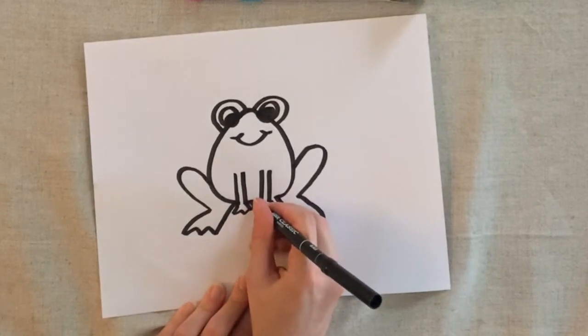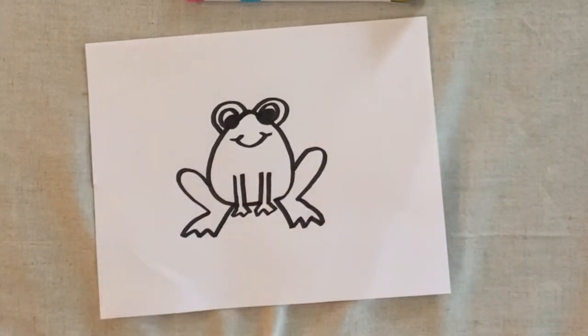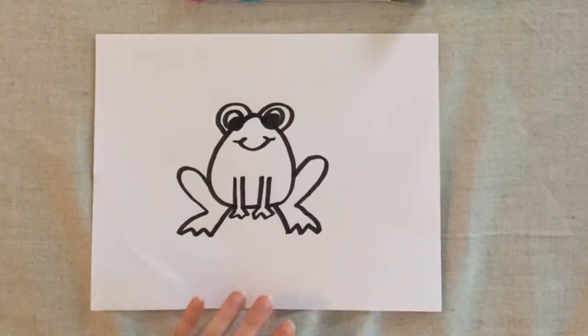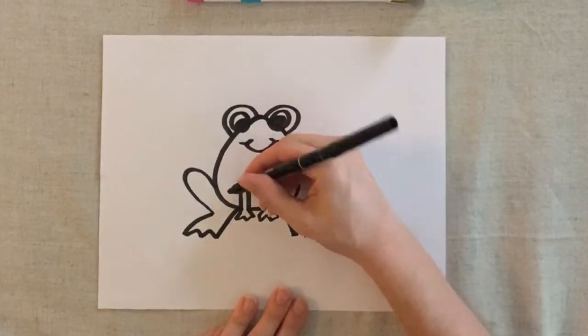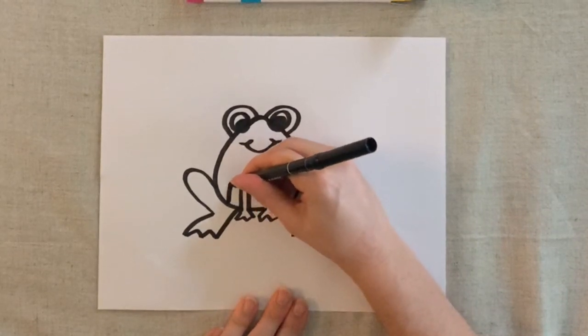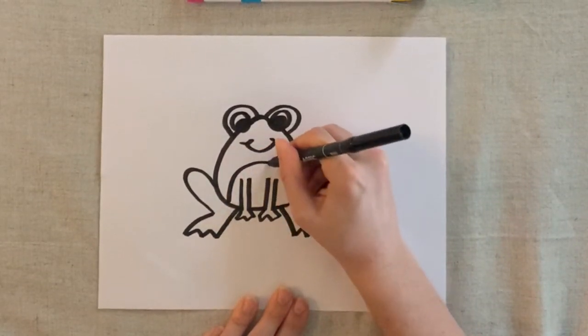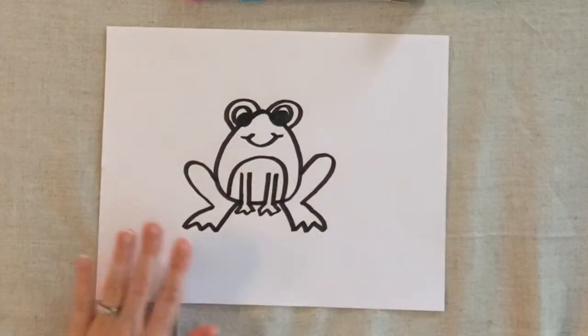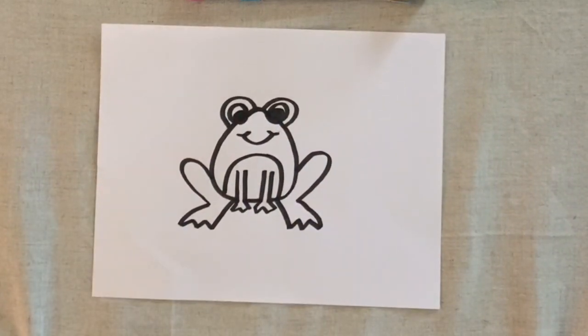There's also a line here in between his front legs that should connect. All right. And if you'd like you can also add the detail on his belly. And there is our frog.